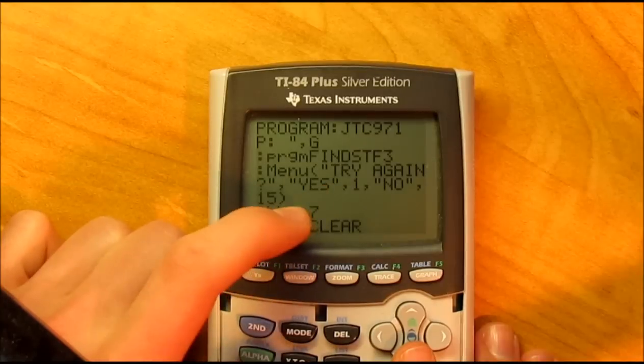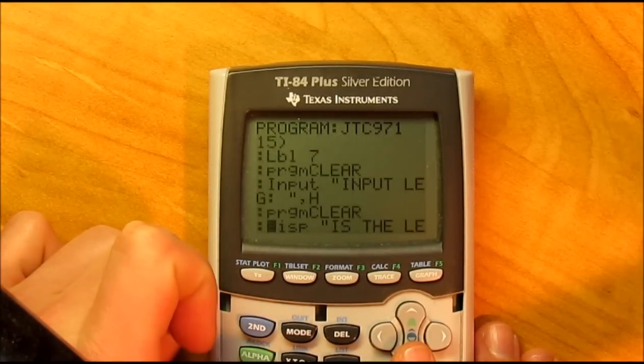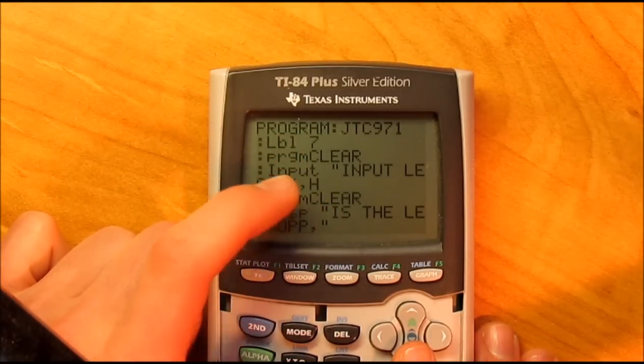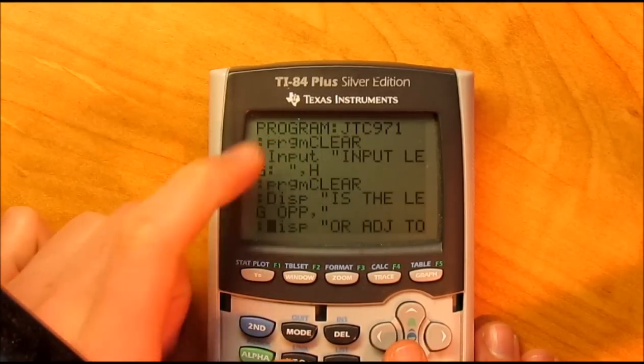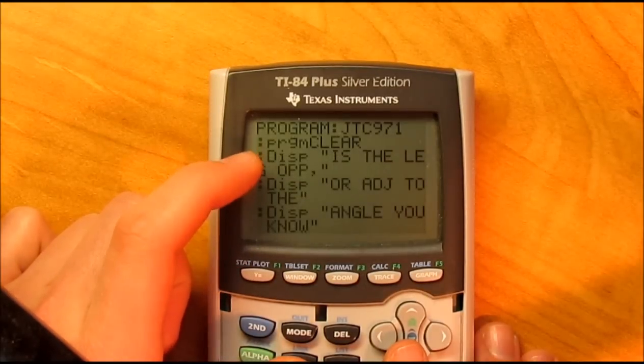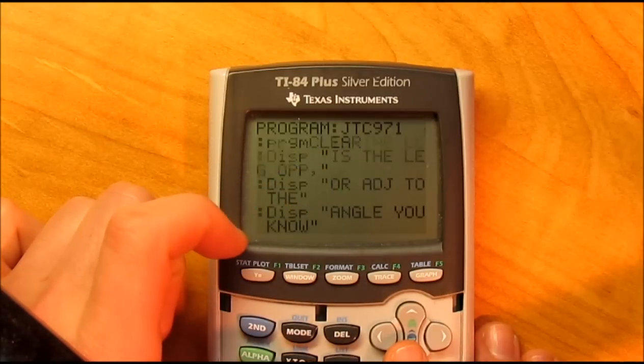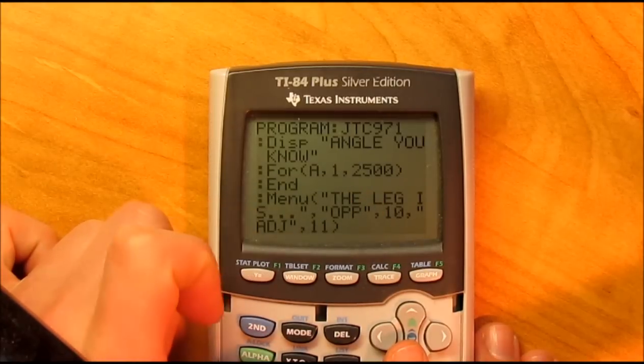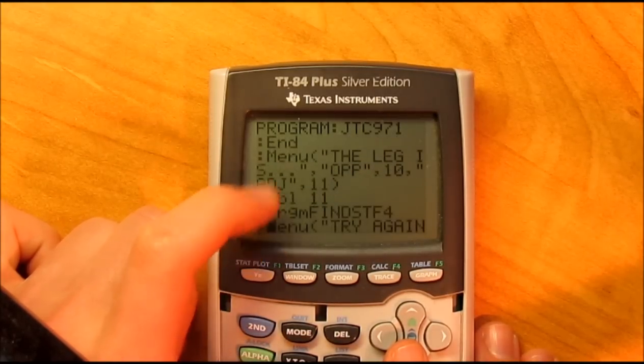Then menu try again, yes, no. Then label 7, this is where you're inputting the leg you know. Running program clear there, this is asking is the leg opposite or adjacent to the angle you know. Waiting for that amount of time and then this is the menu where you choose if it's opposite or adjacent.